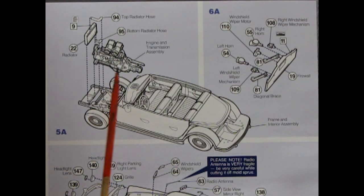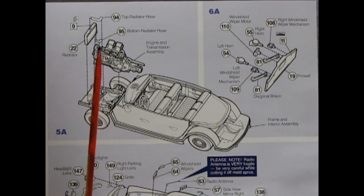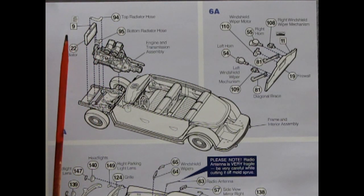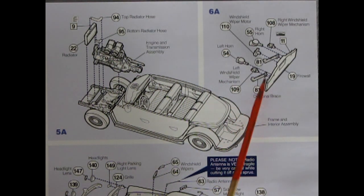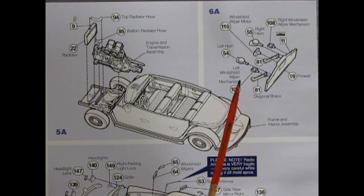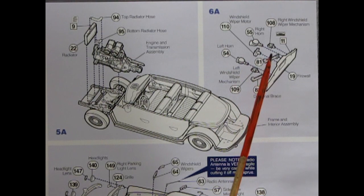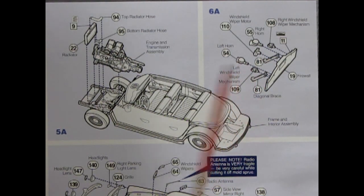Panel six shows our engine dropping into the engine bay and getting hooked up to the radiator with our upper and lower radiator hoses and there are some cool decals which go in there as well. Then we've got our firewall and we've got these braces and our horns and our windshield wiper motors and wiper mechanisms.